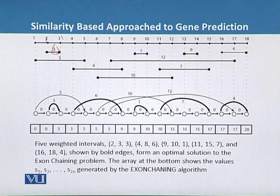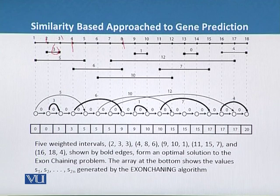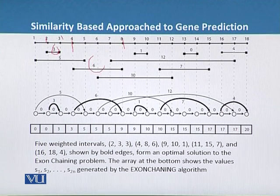The second weight interval is 4, 8, 6. So it means it will start from 4 and it ends up at 8, and it has a weight of 6. So we will write it here as 4, 8, 6.